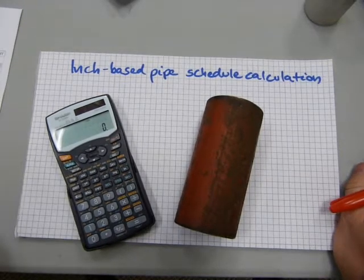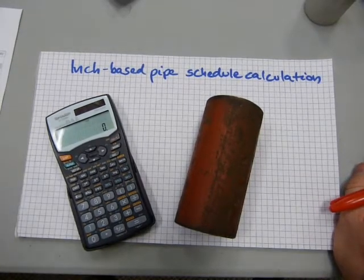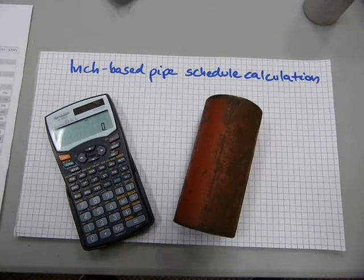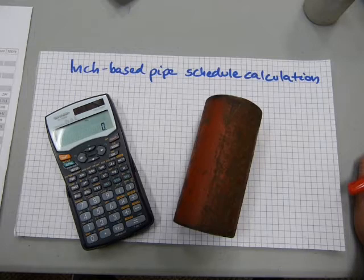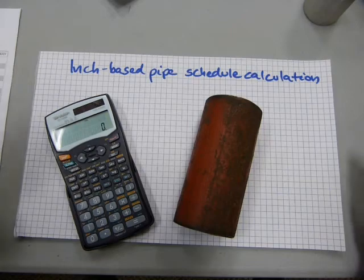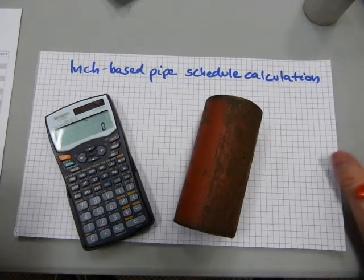In this video I'll show you how to do a pipe calculation, actually three calculations on inch-based pipe. You might call those measurements imperial or US customary or just English traditional wherever you live. It's the same idea.